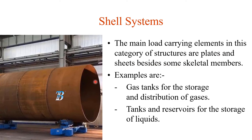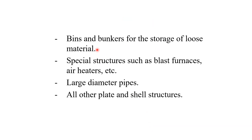The second type is the shell system, where the main load-carrying elements are plates and shells, though some skeletal members may also be introduced. Examples include gas tanks for storage and distribution of gases, tanks and reservoirs for storage of liquids such as overhead water tanks, bins and bunkers for storage of grain and other food materials, storage tanks at petrol pumps for oil, large underground storage tanks for oil, special structures such as blast furnaces and air heaters, large-diameter pipes, and all other plate and shell structures.